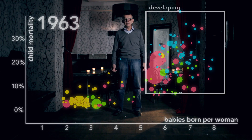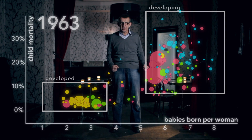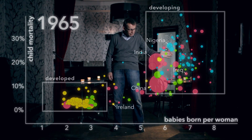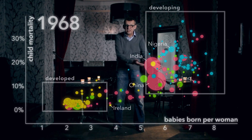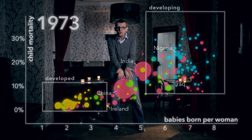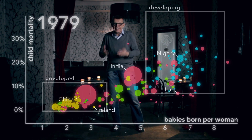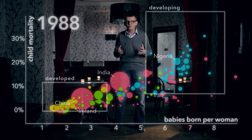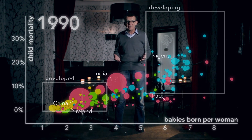In many people's mind, the world still looks like this — developing and developed. But it's a myth. Because the world has improved immensely in the last 50 years. Here we go. Year by year, child mortality fell in almost all countries. And as child mortality fell, women chose to have fewer and fewer babies.